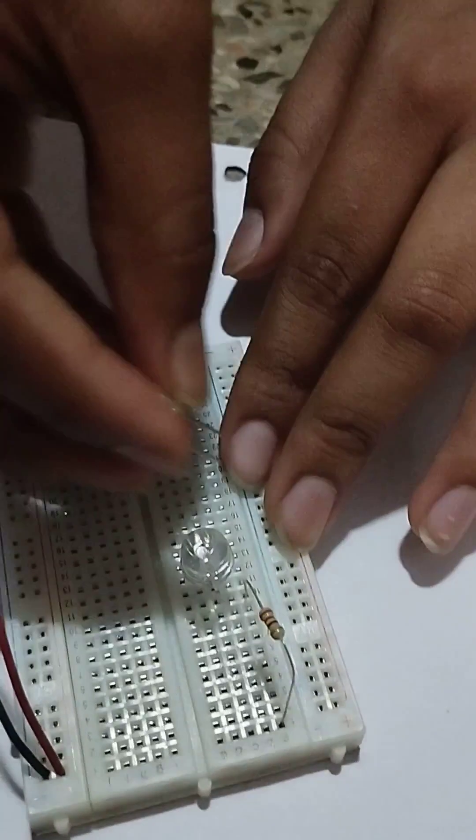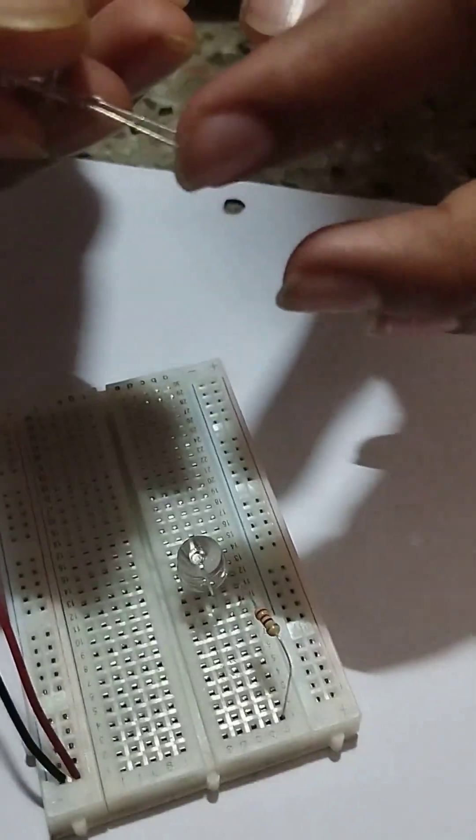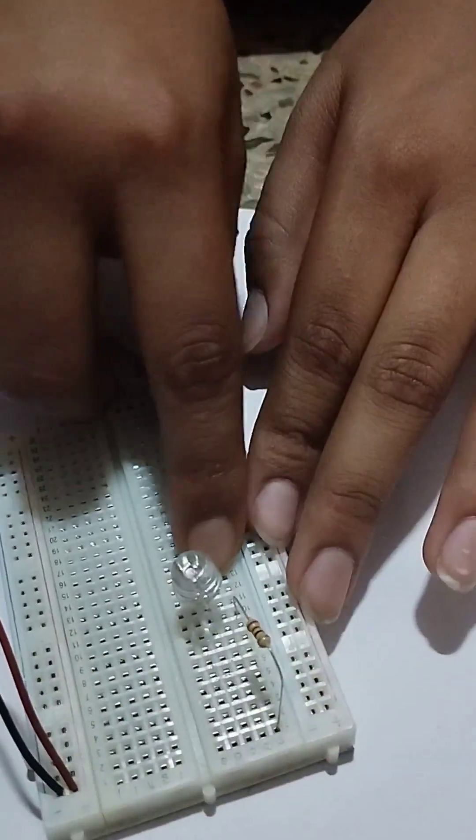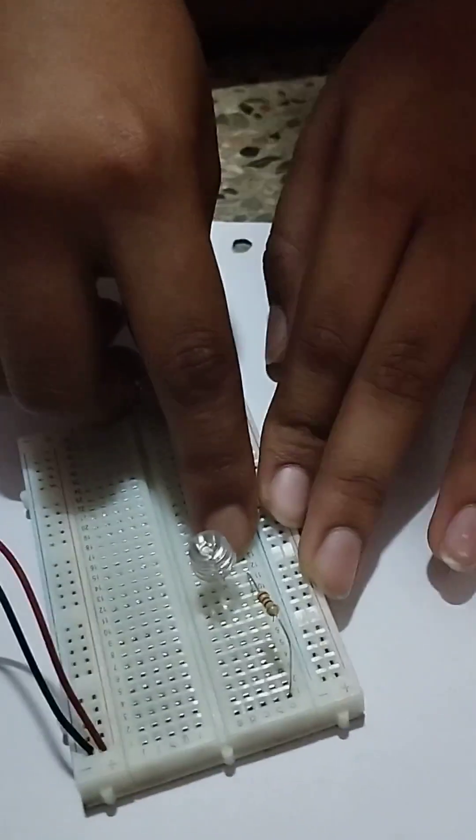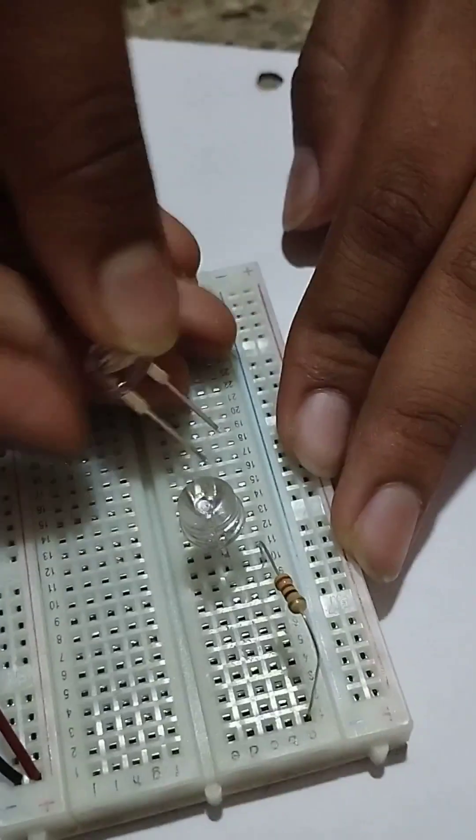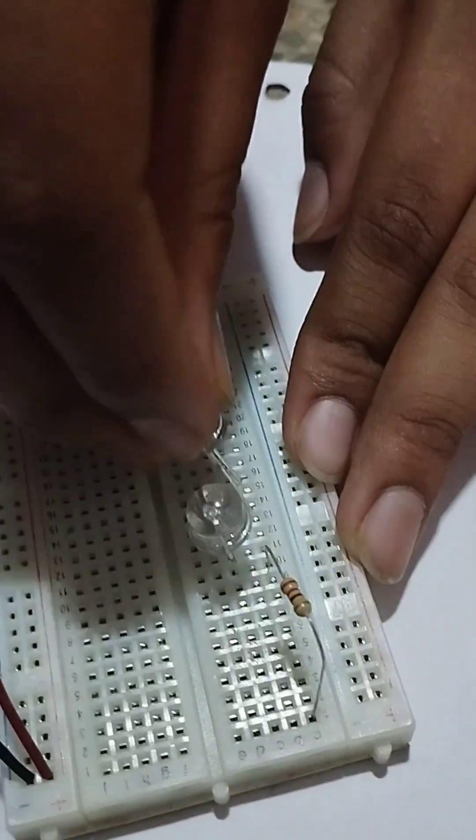Take another LED and connect the positive of this LED to the 12th row B column. This is your choice but you have to connect it properly.